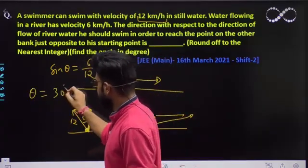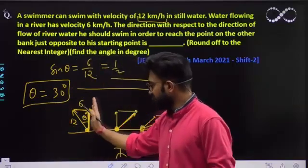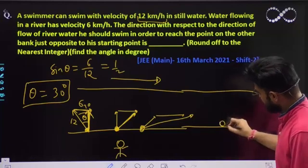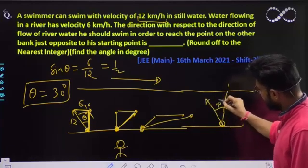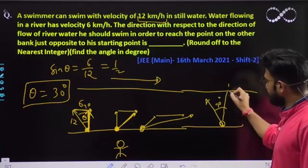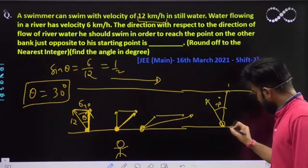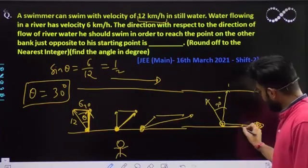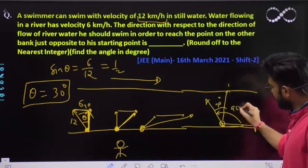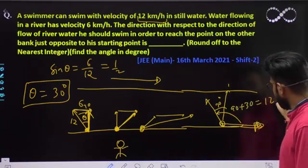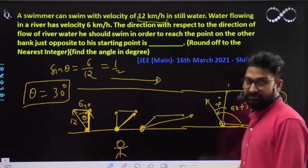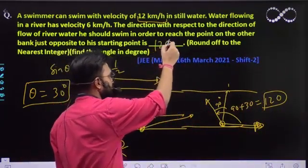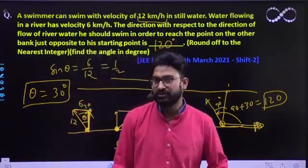Theta's value is 30 degrees. That means he should make this angle of 30 degrees from the vertical. So he will swim at 30 degrees from the vertical, and he will reach the opposite bank. Now, the river flow is in this direction. So the angle he makes with the river flow direction is 90 plus 30, which is nothing but 120 degrees. So the angle from the river flow direction should be 120 degrees. That would be the correct option. I hope this question is clear to everyone. Thank you.